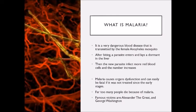What is malaria? It is a very dangerous blood disease that is transmitted by the female Anopheles mosquito. After biting, a parasite enters and lies dormant in the liver. Then the new parasite affects more red blood cells and the number increases.